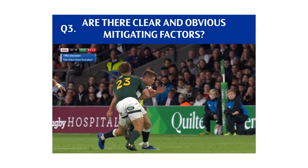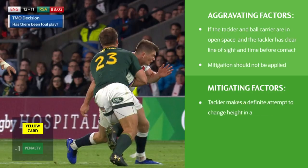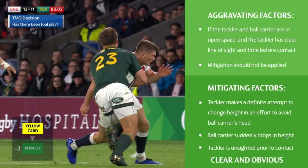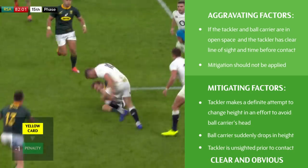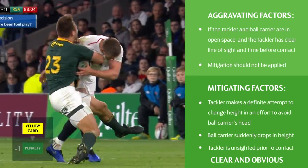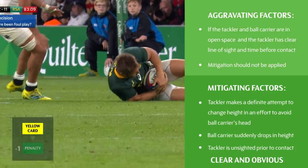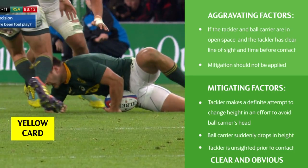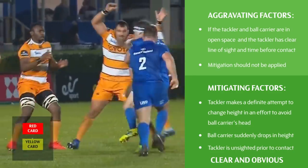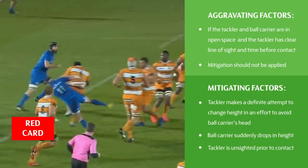Once an initial decision has been made, the match officials must ask whether there are any aggravating or mitigating factors. These possible factors must be clear and obvious in order for the sanction to be reduced. In this example, both players are in space and the tackler has a clear line of sight prior to the tackle, so aggravating factors are present and there are no clear and obvious mitigating factors — the final decision remains a yellow card. In the next example, there are no clear and obvious mitigating factors, so the final decision remains a red card.